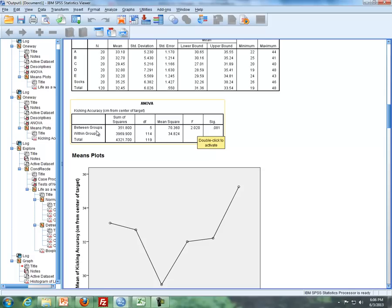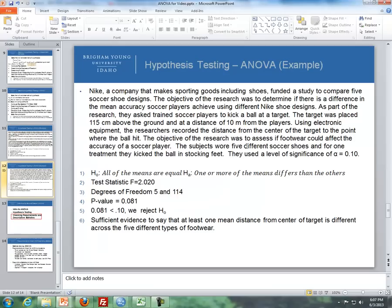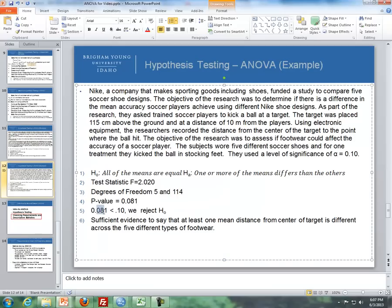My test statistic is 2.020. My degrees of freedom, there's two. There's the between group or the numerator degrees of freedom, which is five, and the within group or the denominator degrees of freedom, which is 114. My p-value is 0.081. And since 0.081 is less than our level of significance, which is 0.10, we reject the null hypothesis.